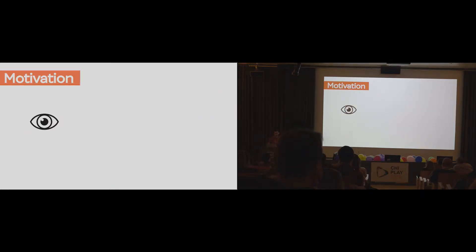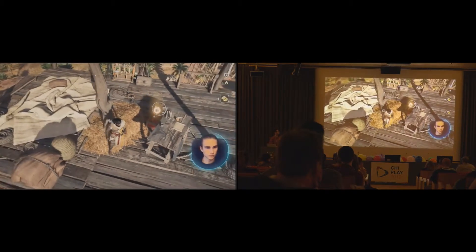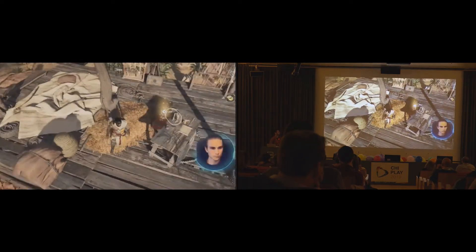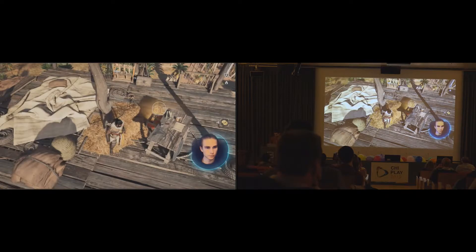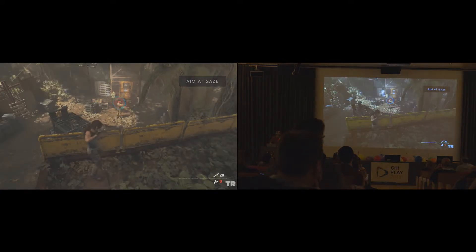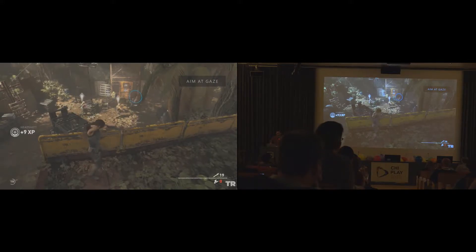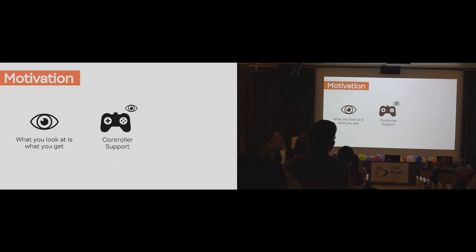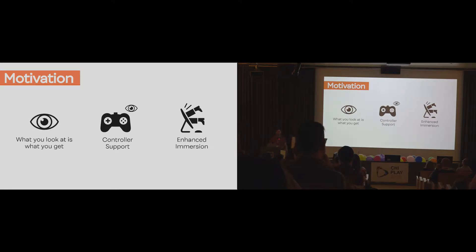I'm going to talk about gaze interaction and how it's being used now. For example, in Assassin's Creed, the player could just look at the objects that they want to interact with to collect them. We have other examples, like in Tomb Raider, in which the player could automatically aim the gun towards the enemies that they want to shoot. These two examples show how gaze has been embraced using the interaction metaphor of 'what you look at is what you get,' providing more accessible gameplay, better performance with the controller, and even enhanced immersion.